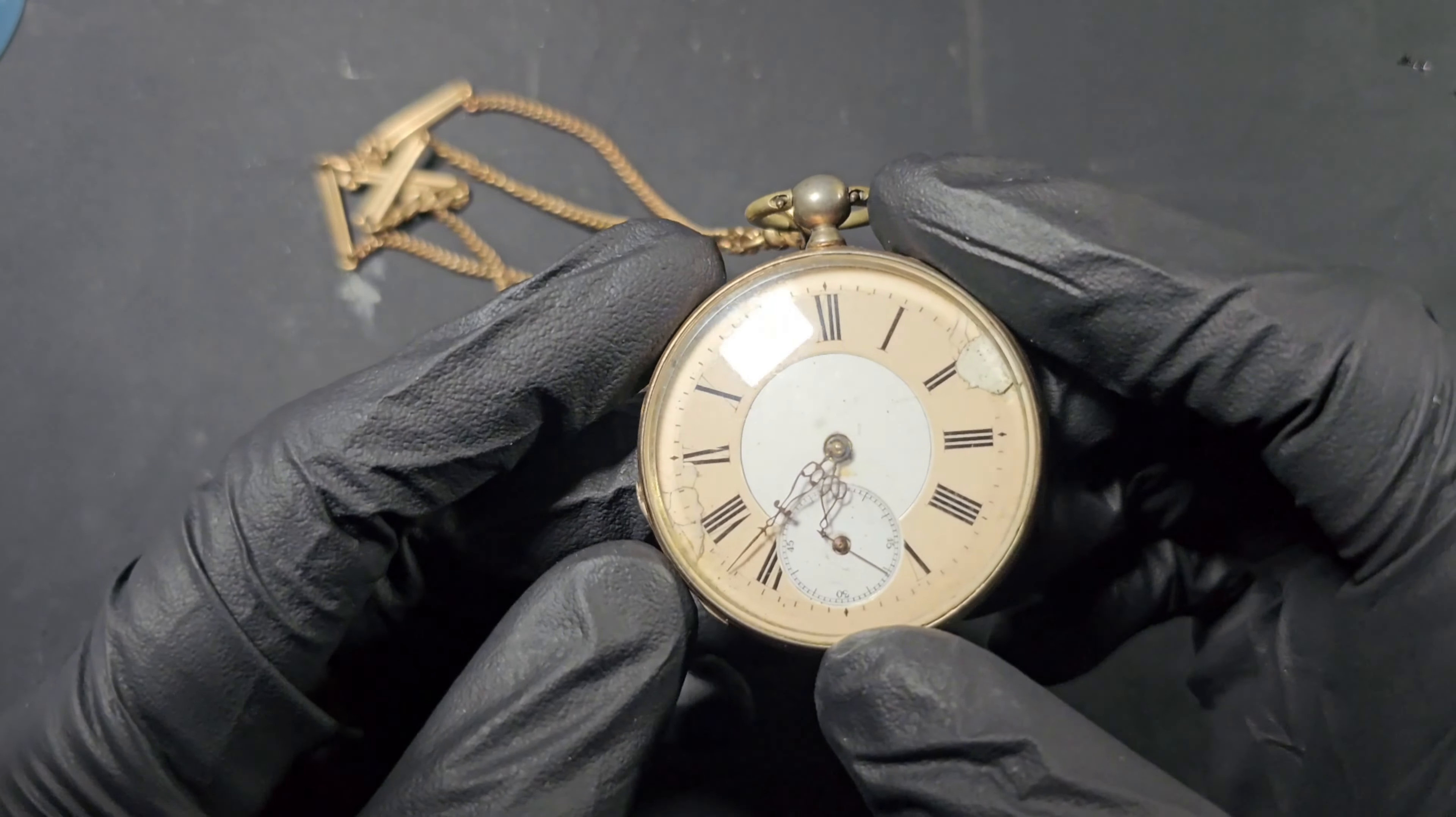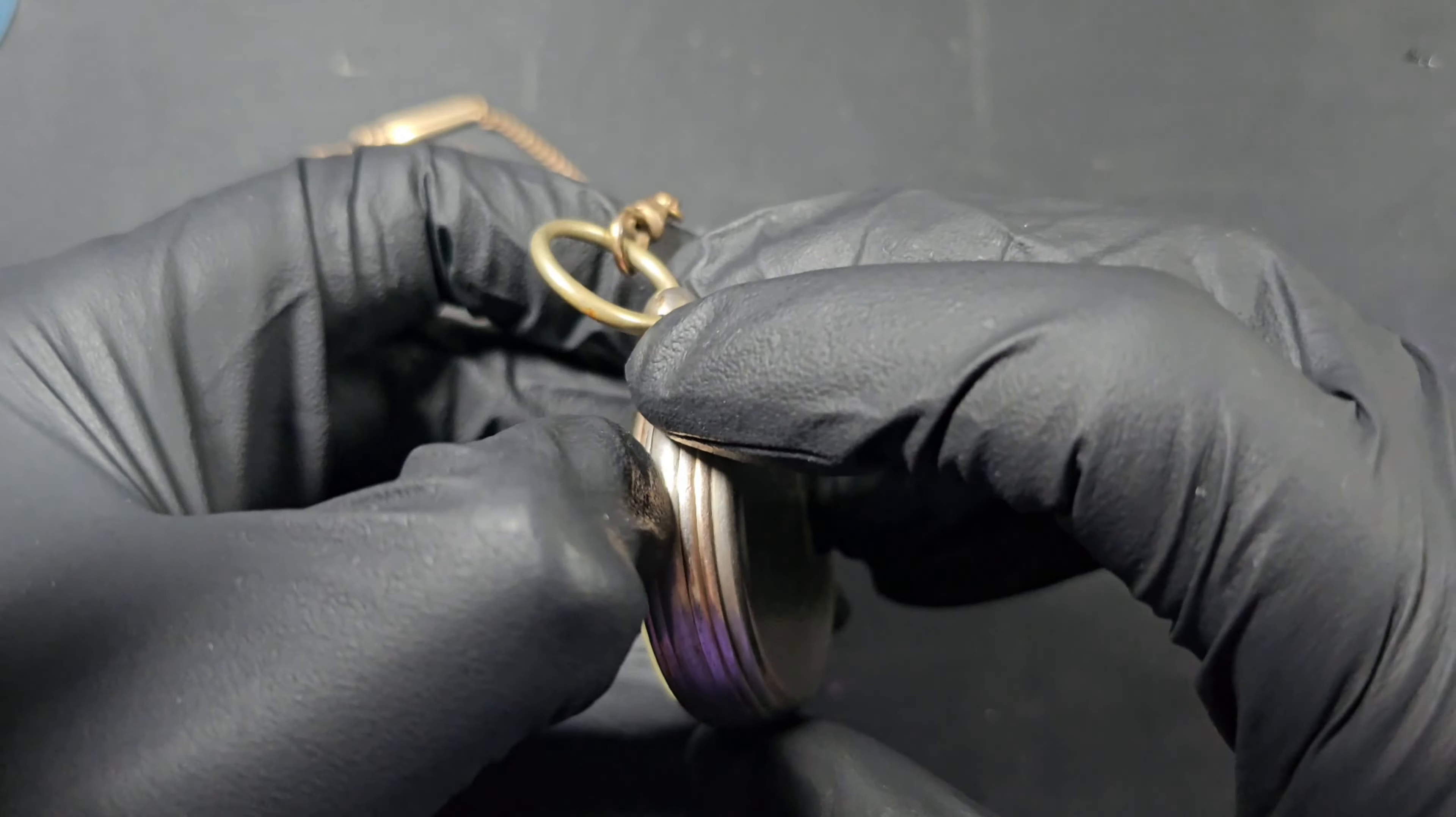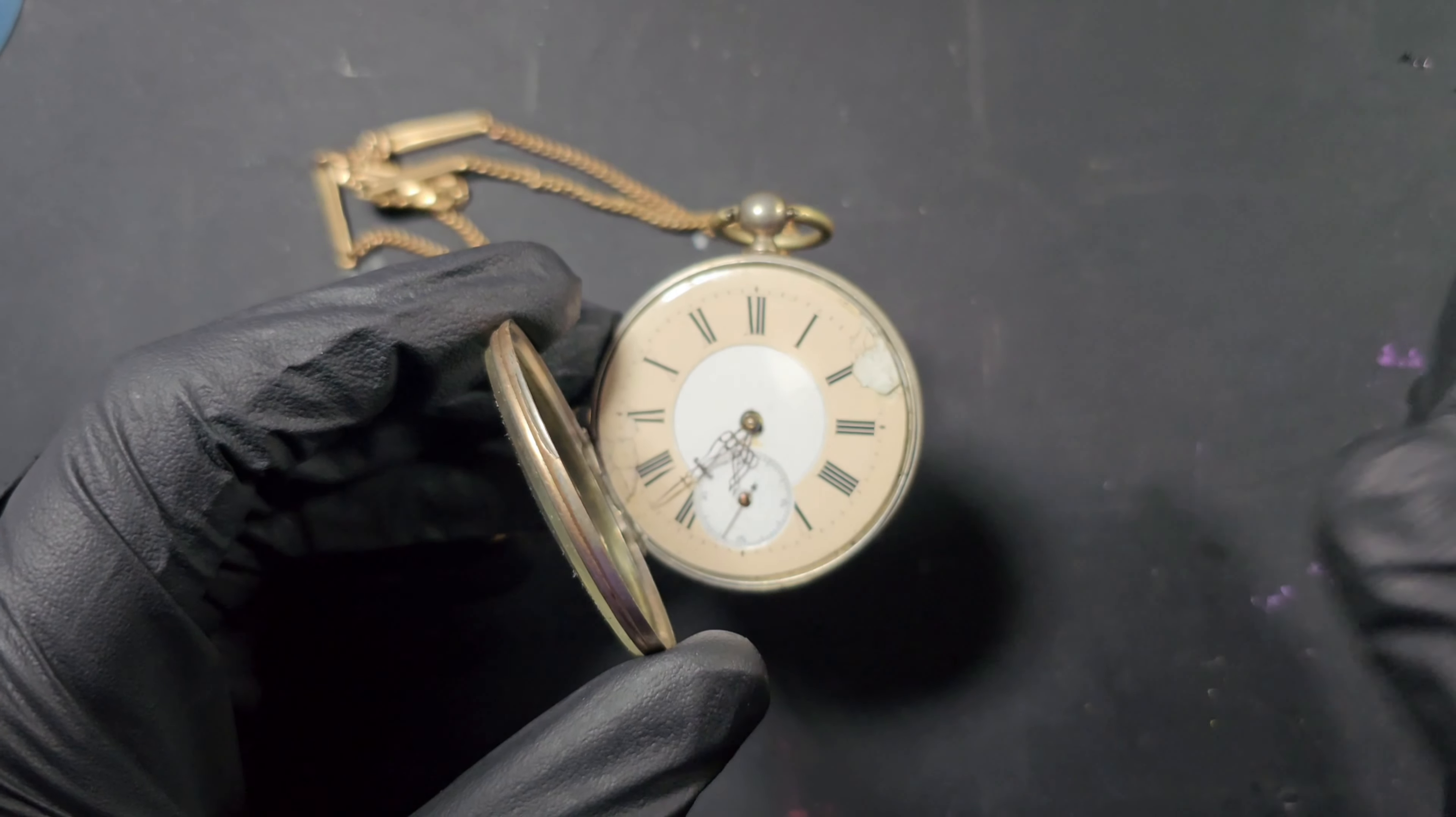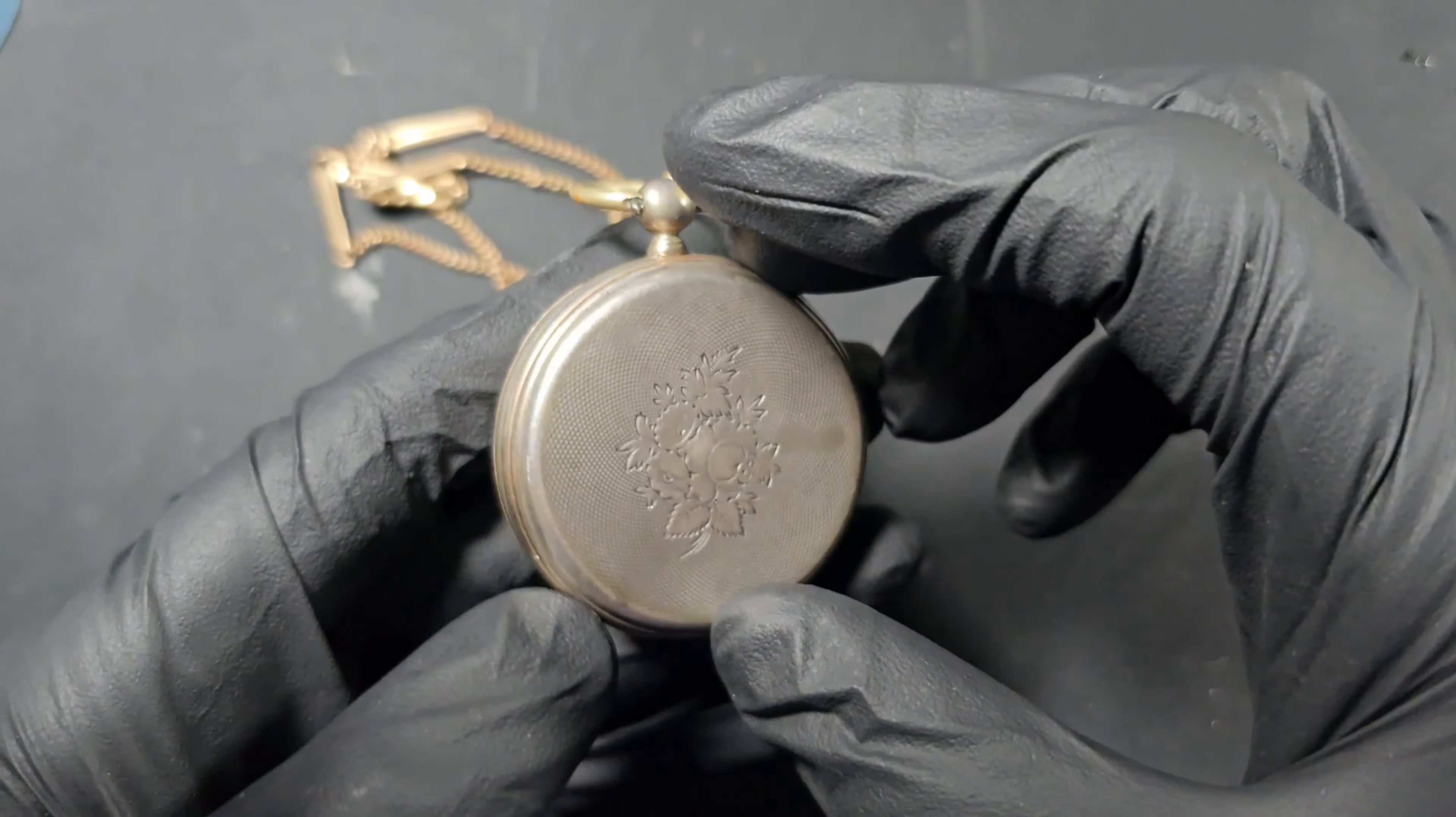I have this really old pocket watch. It works, it runs. Now I want to do something with this. I was originally thinking of removing the actual watch part and doing something with the actual housing.